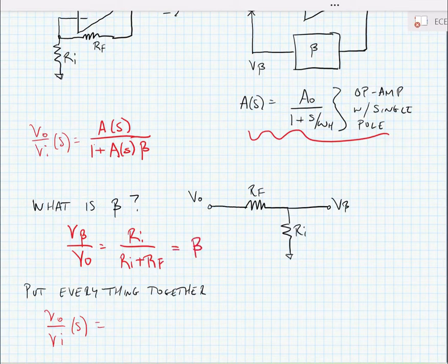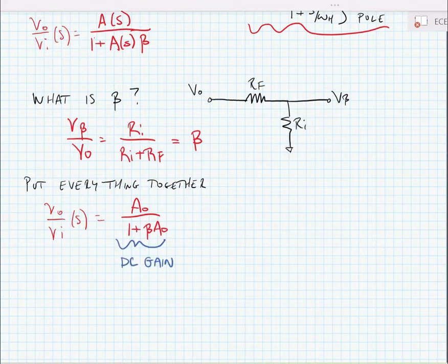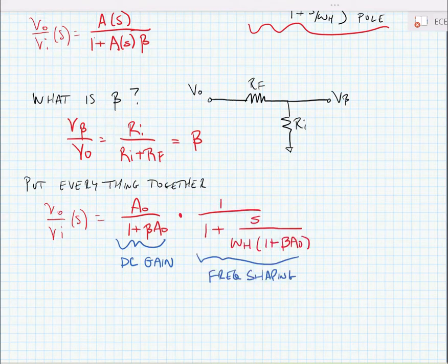Let's go ahead and put everything all together into one big equation. The voltage gain as a function of frequency is given by a DC gain consisting of A₀, the DC gain of the op-amp, divided by (1 + βA₀), and this is multiplied by a frequency shaping factor. Here one of the things that you can see is that the feedback reduces the gain of the op-amp and extends the pole frequency of the op-amp.